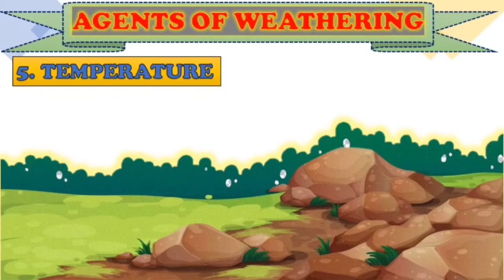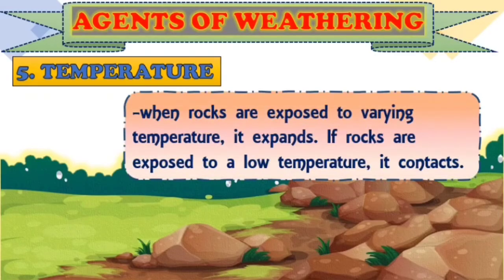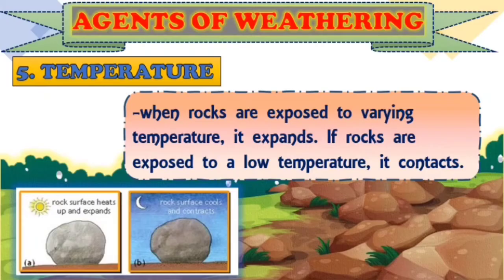Number five agent of weathering is temperature. Rocks are exposed to changes in temperature. When rocks are exposed to high temperature, they expand. When rocks are exposed to low temperature, they contract. During sunlight, there is expansion of the rocks due to high temperature, but during the night, the rocks cool off and contract. The repeated expansion and contraction of rocks due to changes in temperature may result in weathering of rocks.